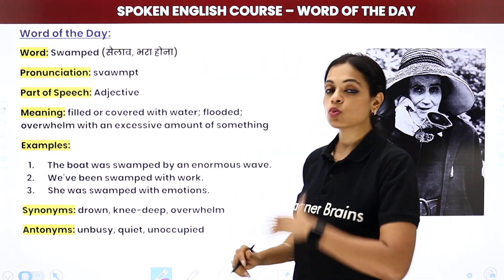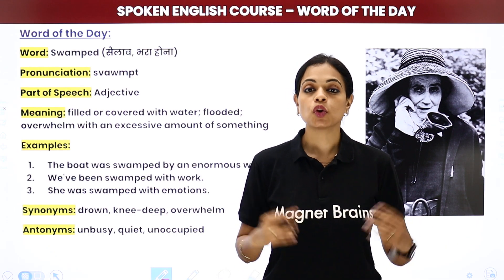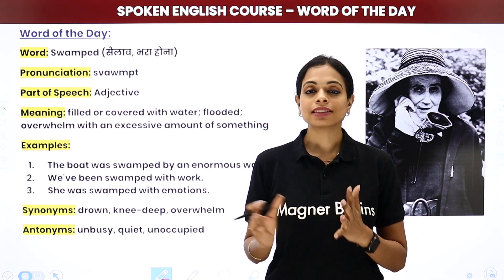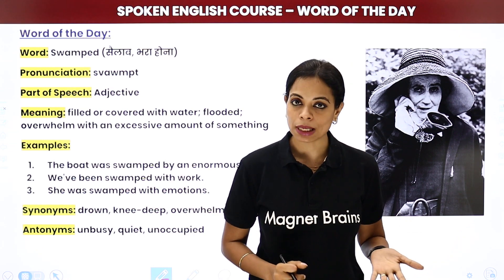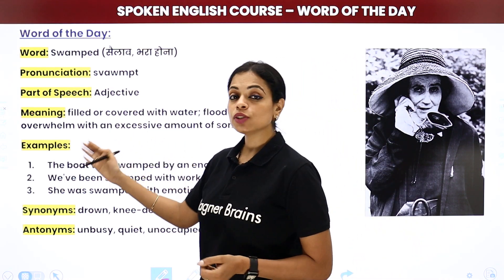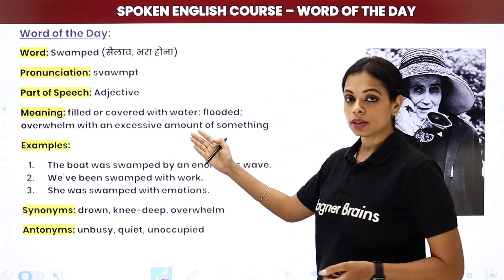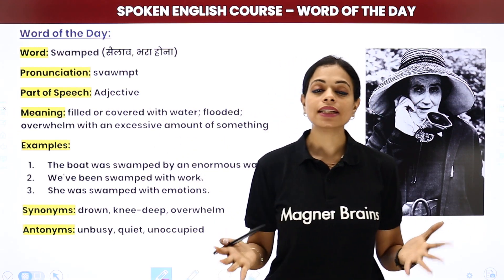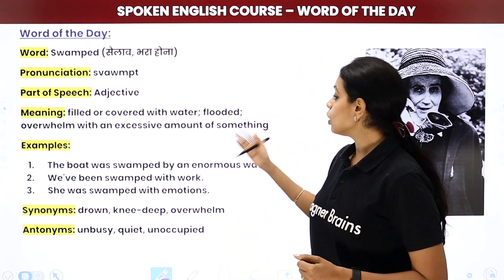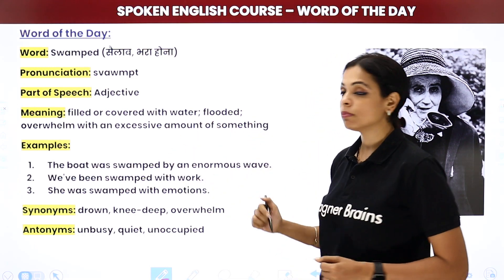Toh ab mein bata rahi hoon ke swamped of — like swamped of work, swamped of bees, swamped of this, that. Iska matlab mein kisi chiz ko describe kar rahi hoon, toh yeh adjective ho gaya. Meaning kya ho jayega? Filled or covered with water — agar apan jise swamp, basically daldal ko kehte hai. Doosra ho gaya: flooded.